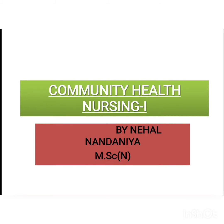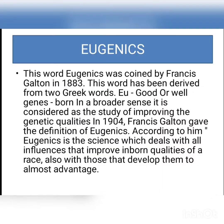Welcome back. We are going to discuss eugenics, as we have already seen the concept and dimension of health. Now we start the second unit, first topic: eugenics. This word 'eugenics' was coined by Francis Galton in 1883, derived from two Greek words — 'eu' meaning good or well, and 'genes' meaning born.